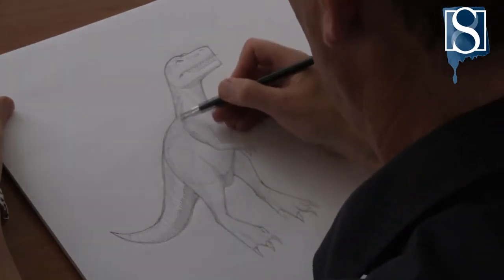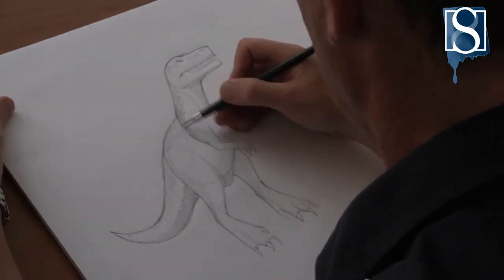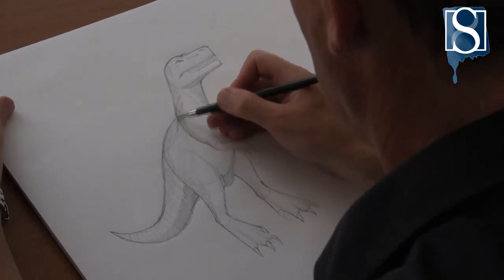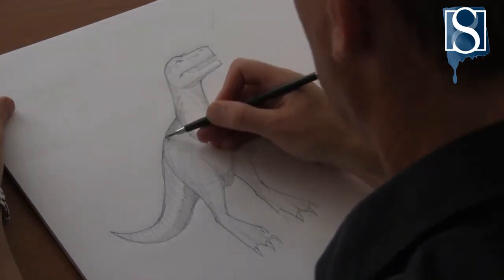Now start emphasizing the darker areas of the dinosaur. This will give a more three-dimensional feel to the drawing.